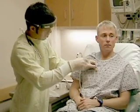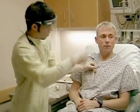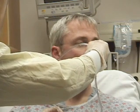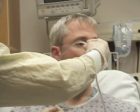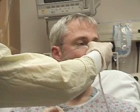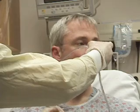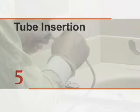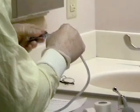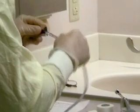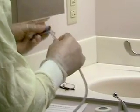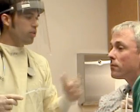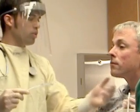The proper depth of tube insertion is approximated by measuring the distance from the xiphoid process to the angle of the mandible and then to the nostril. Lubricate the distal tip of the nasogastric tube with surgical jelly or viscous lidocaine. Position the patient sitting upright in the sniffing position.